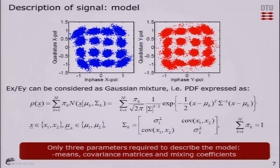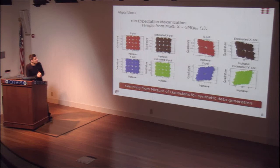We want to construct the PDF of our received signal. In this case, we have 16 clusters due to the 16 points in the 16 QAM constellation. We assume each class can be described by a two-dimensional Gaussian distribution. The beauty of this is that we only need two parameters to characterize it: the mean and the covariance matrix. Once we have those, we have the probability density functions of our symbols.